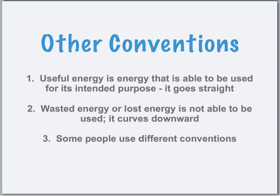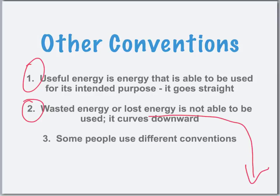When making Sankey diagrams, we distinguish between useful energy and wasted energy. Useful energy is what we can use for the task the device was intended for — for example, kinetic energy from a gasoline engine. The other energy, usually heat, is called wasted or lost energy. It's not truly lost, but we're not able to make use of it. We'll curve wasted energies down to the bottom and keep useful energies going straight across the page.